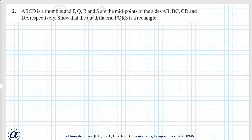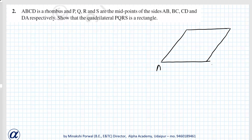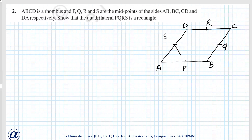First of all, we will make a figure. ABCD is a rhombus, with vertices A, B, C, and D. Then midpoints of sides AB, BC, CD and DA are P, Q, R, S respectively. We will join these points.